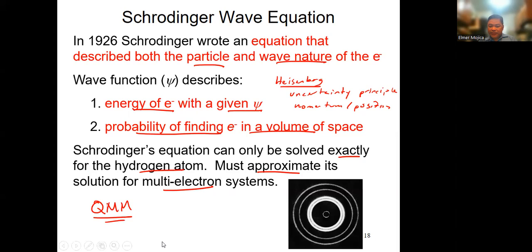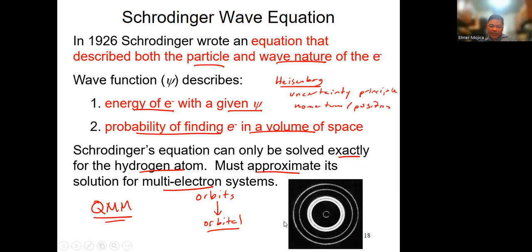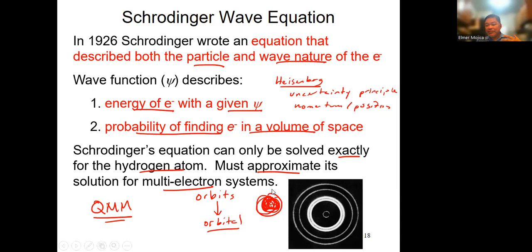From this, we have the quantum mechanical model. The concept of orbits from Bohr was replaced by orbitals. An orbital is a region in space where you can possibly or probably find the electron. The analogy is like an electric fan — one blade is the electron. When it's spinning, you can't pinpoint where the blade is, but you can know its speed. The probability of where the blade is — that's the orbital.